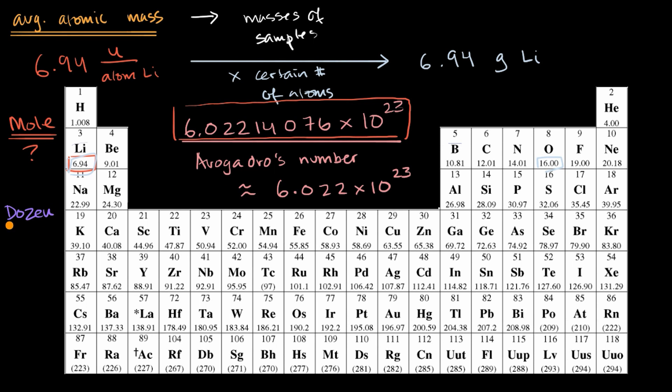If I say I've got a dozen of eggs, how many eggs do I have? Well, if I have a dozen of eggs, that means I have 12 eggs. So if I say I have a mole of lithium atoms, how many lithium atoms do I have? That means that I have 6.02214076 times 10 to the 23rd lithium atoms. Exact same idea, it's just that Avogadro's number is much hairier of a number than a dozen.